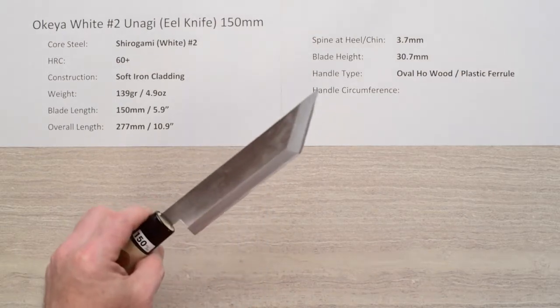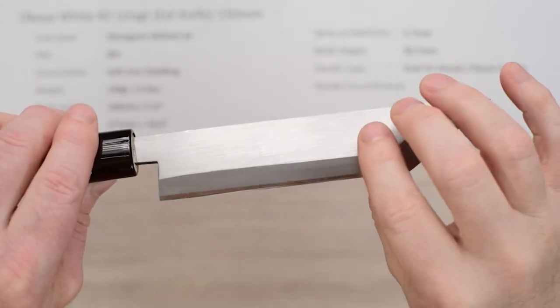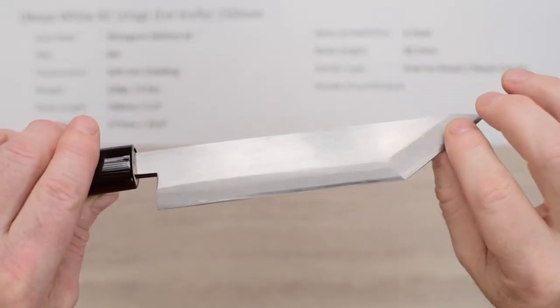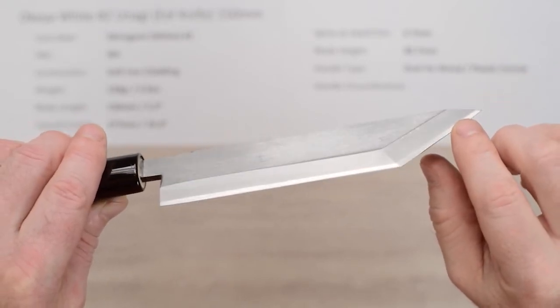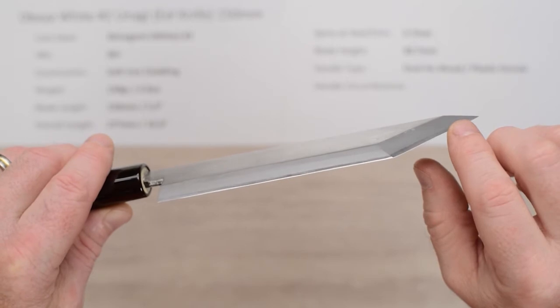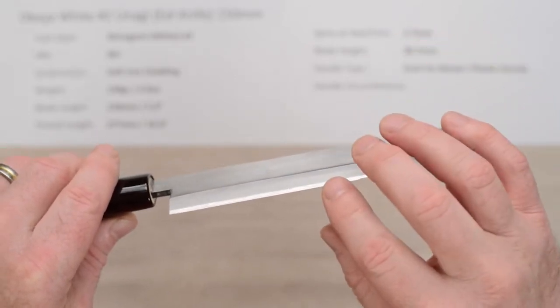This is a single bevel style blade. The front or right side of the blade in this case has the big primary bevel ground down towards the edge. This does have a little bit of a secondary bevel on the edge out of the box. It's not all the way ground down to the edge, known as a zero grind.